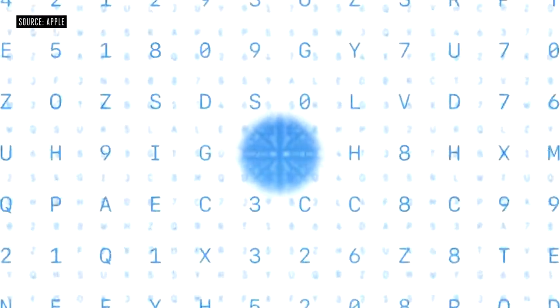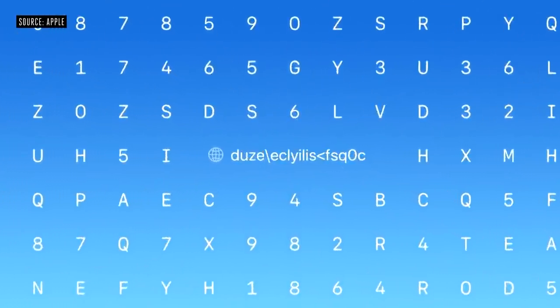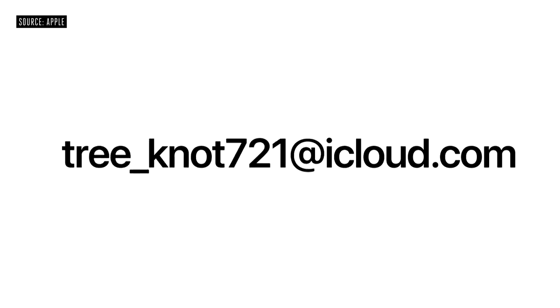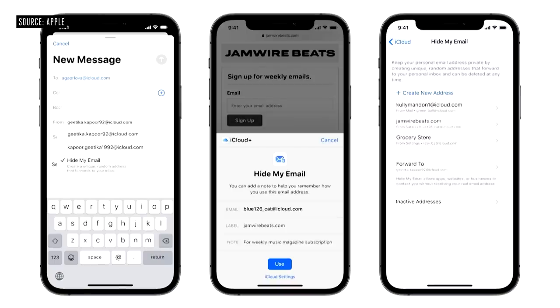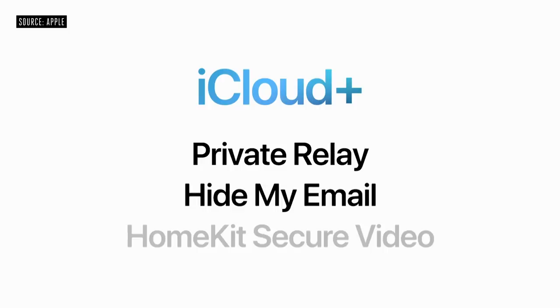We're upgrading our paid subscription to something we call iCloud Plus. We're introducing a new service called Private Relay. It ensures that the traffic leaving your device is encrypted so no one can intercept and read it. All of your requests are sent through two separate internet relays, designed so that no one — including Apple — can see both who you are and what sites you're visiting. We're also introducing Hide My Email: you can share a unique, random address that forwards messages to your personal inbox, built right into Mail, Safari, and iCloud settings. iCloud Plus also includes built-in support for HomeKit Secure Video — all of iCloud plus Private Relay, Hide My Email, and expanded HomeKit Secure Video support for the same low prices we offer today.